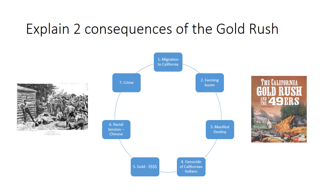Unfortunately for the Indians living in California, they were in the way, leading to a huge genocide. Not only were individuals getting wealthy, but the Gold Rush gave a huge financial injection into the US economy. There was also significant racial tension — people from around the world including China and Mexico came to California. Groups like the Chinese or Mexicans, working together, were quite successful, creating resentment amongst smaller groups of whites, and murders and deaths were quite common.